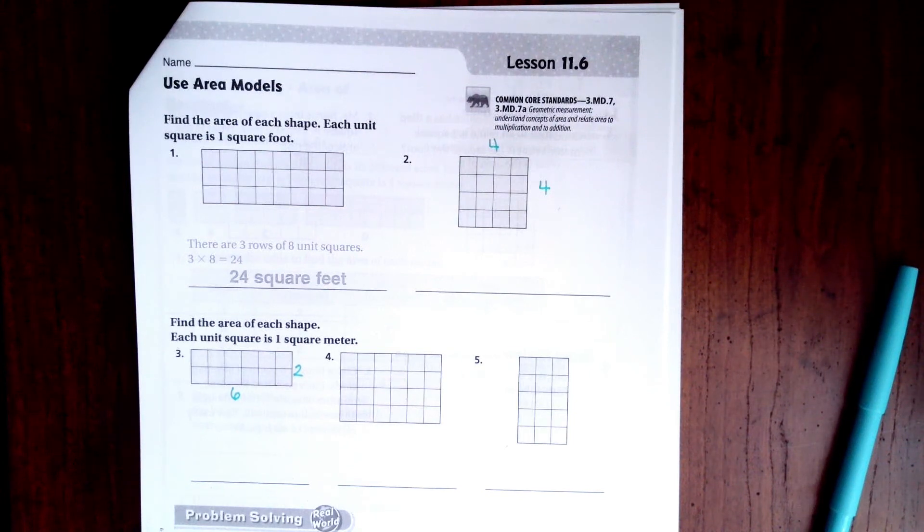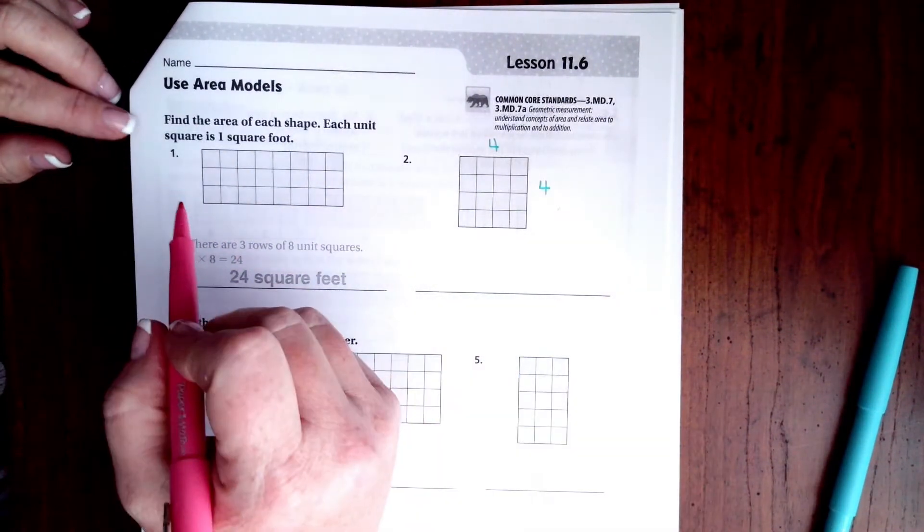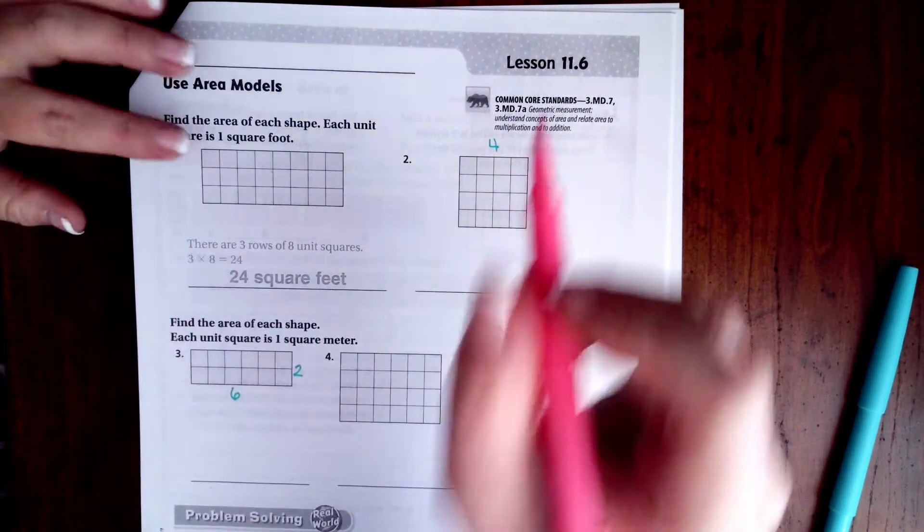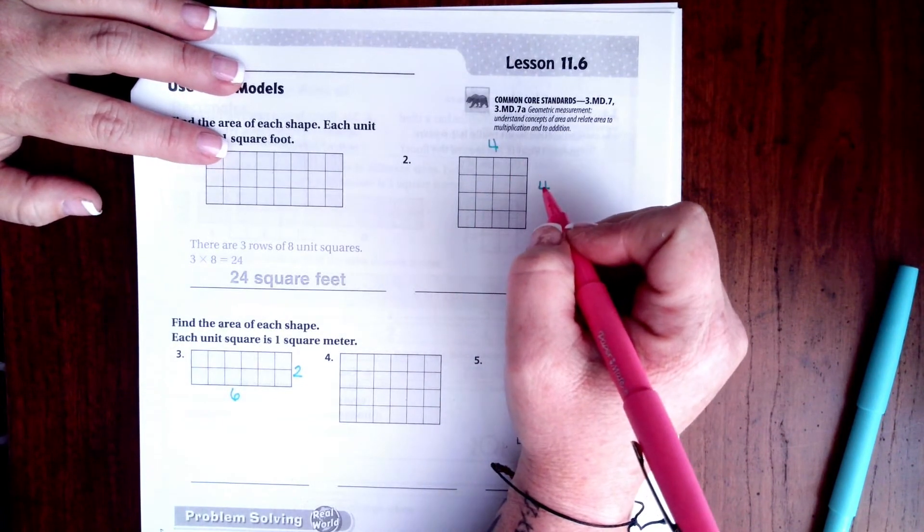Hi guys, welcome to third grade chapter 11 lesson 6. We're going to get started. We are finding area, which means that you are taking two of the sides and you are multiplying them as long as it's a square or a rectangle.